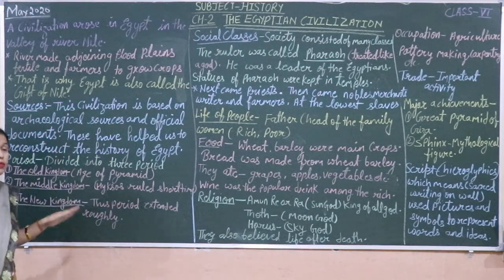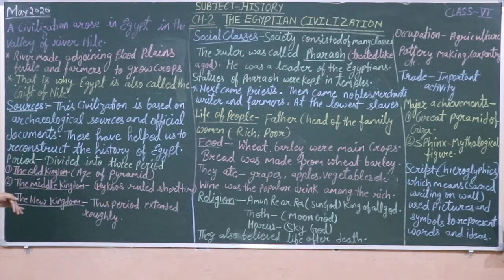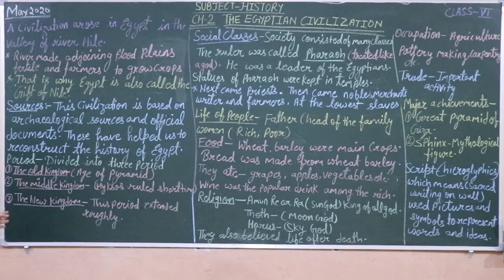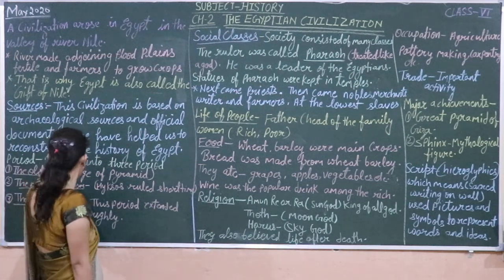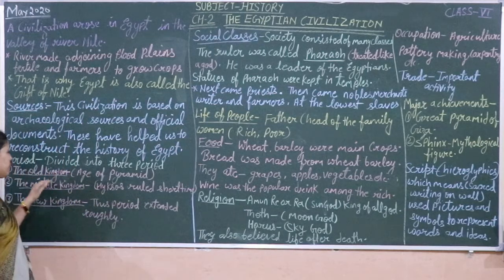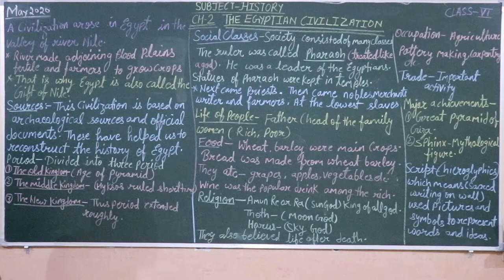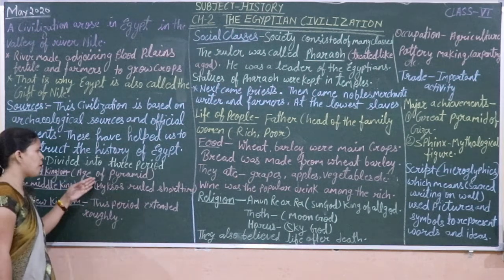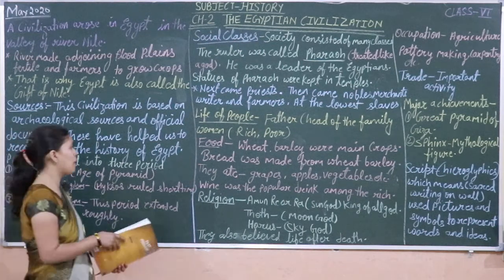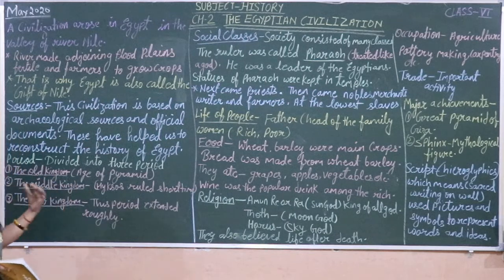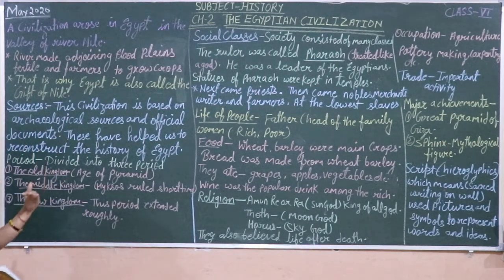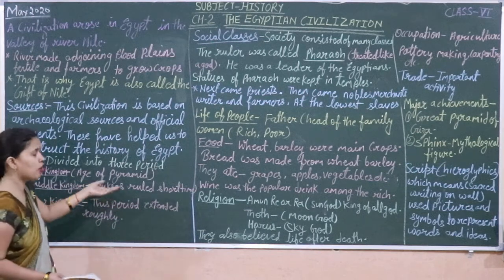Egyptian civilization is divided into 3 periods. First, the Old Kingdom — this is the first age of the Pharaohs, when the Pharaohs ruled. The Old Kingdom became a new civilization. Then the Middle Age, when developing civilization and new things and changes — Hawks ruled during this period. This is the Middle civilization.